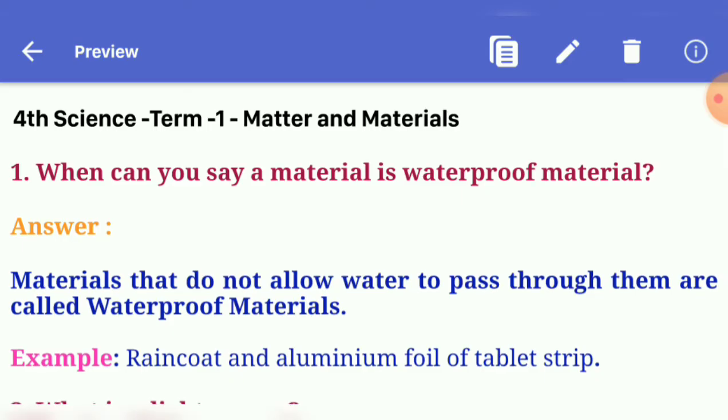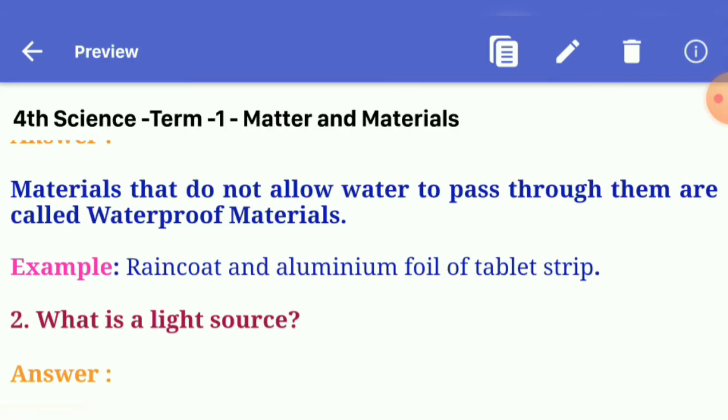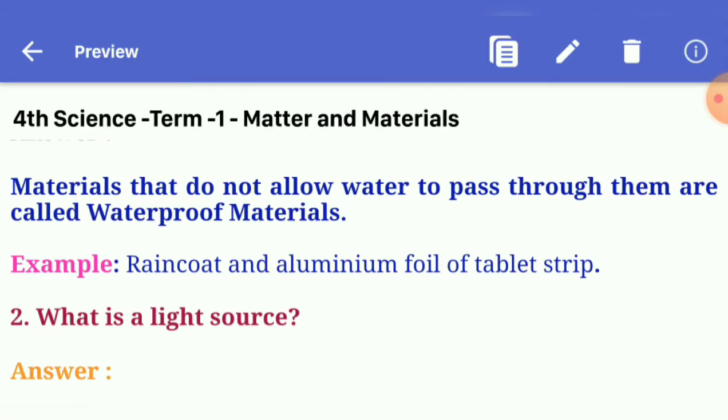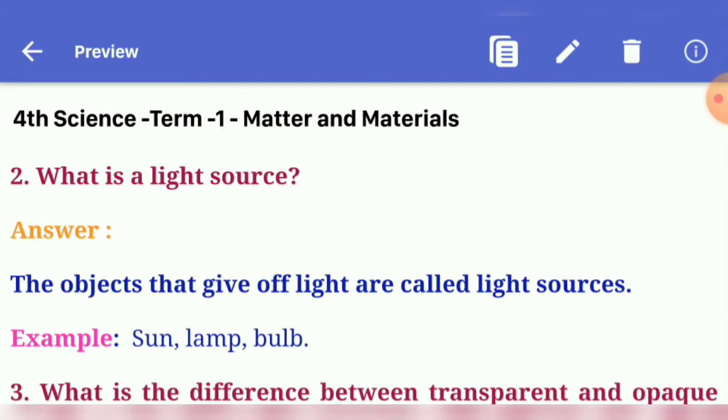Answer: materials that do not allow water to pass through them are called waterproof materials. Example: raincoat and aluminum foil of tablet strip. Second question: what is a light source? Answer: the objects that give off light are called light sources.